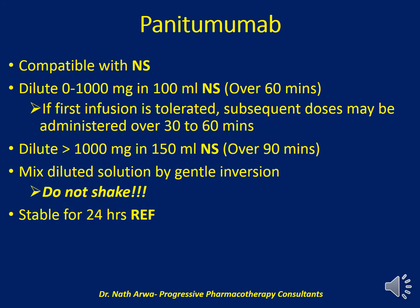Panitumumab is compatible with normal saline — avoid using 5% dextrose. We should dilute doses of up to 1 g in 100 ml of normal saline, homogenize, and infuse over 60 minutes. If the first infusion is tolerated well, subsequent doses may be administered over 30 to 60 minutes. For doses above 1 g, dilute in 150 ml of normal saline and infuse over 90 minutes. Mix by gently inverting the bag — do not shake. Such diluted and homogenized products are stable for 24 hours under refrigeration.